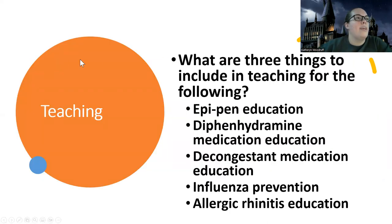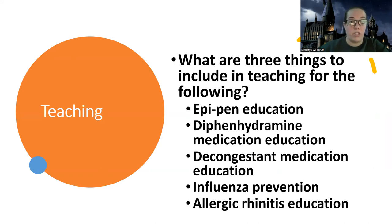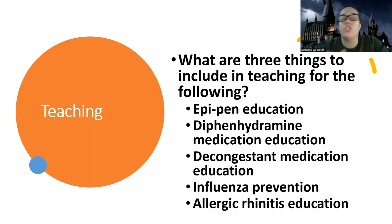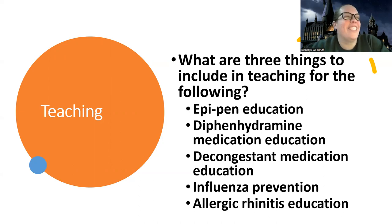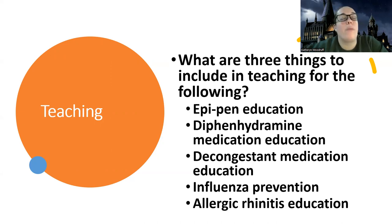The next and last slide asks: what are three things to include in teaching for the following clients? A lot of nursing school questions are about teaching, so make sure you're taking the time to think about what you'd teach these patients. For an EpiPen, key teaching points include: make sure it's not expired, give it in the thigh, you may need repeated doses, seek help afterward, and make sure family knows how to use it. For diphenhydramine — Benadryl — teach them to avoid anything that will make them tired or drowsy like alcohol, that it can have a paradoxical reaction like insomnia or excitability, and that if they have a dry mouth they can use lozenges or candies.